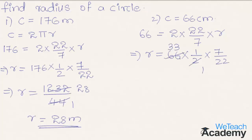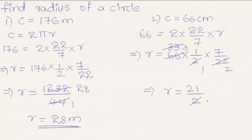Simplifying: 2 thirty-three times is 66, and 11 two times is 22, 11 three times is 33. So we get r equal to 3 into 7 that is 21 divided by 2. Simplifying further: 2 times 10.5 is 21, so hence we get the value of radius r equal to 10.5 centimeters.